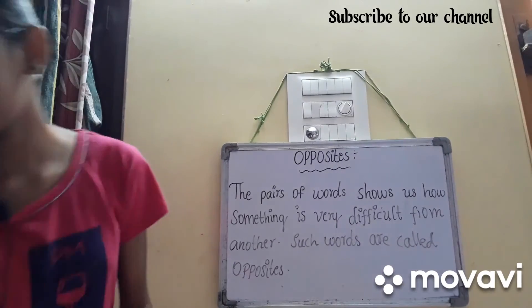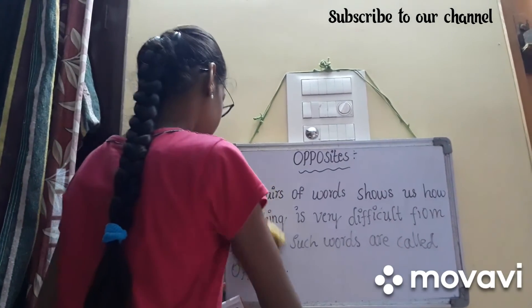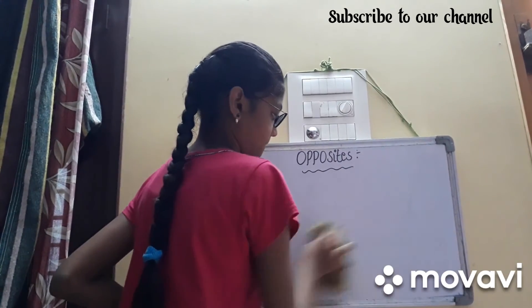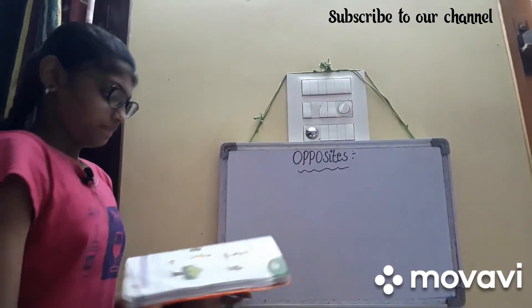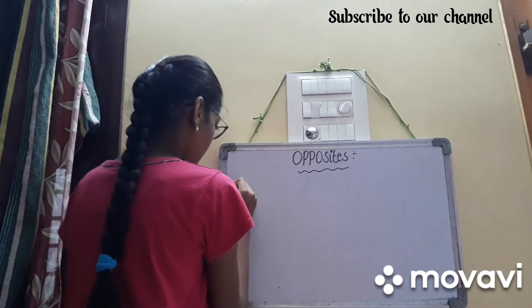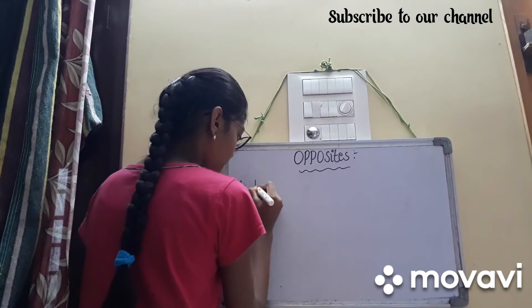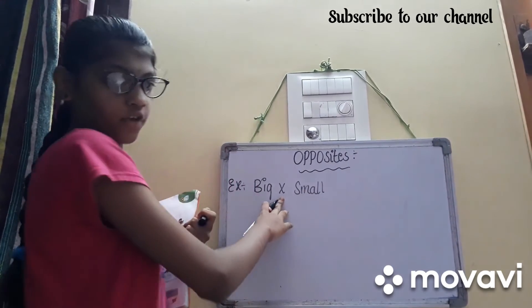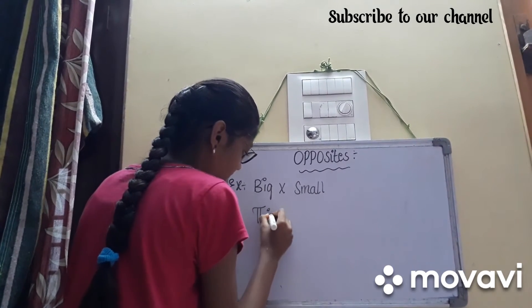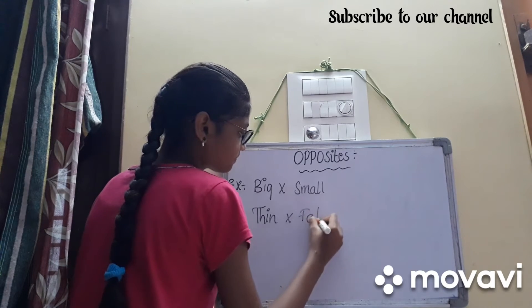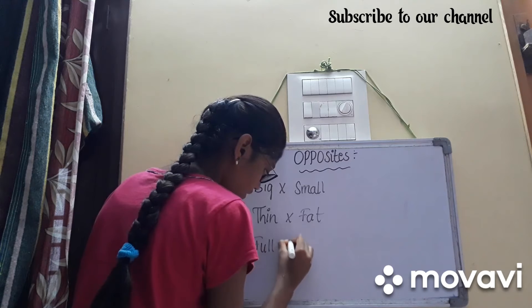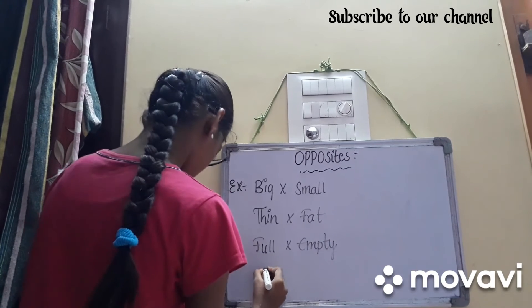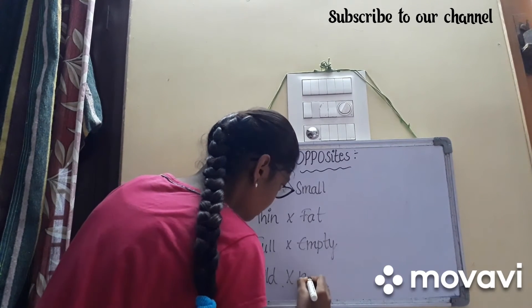Now we will write some more examples. Big — Small. This is the symbol of opposites. Thin — Fat. Full — Empty. Old — New.